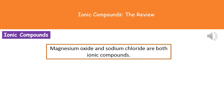Welcome to our review on ionic compounds. Previously we've looked at how ionic bonds are made, and anything joined by an ionic bond is known as an ionic compound. Two examples you need to know about for your exam are magnesium oxide and sodium chloride.